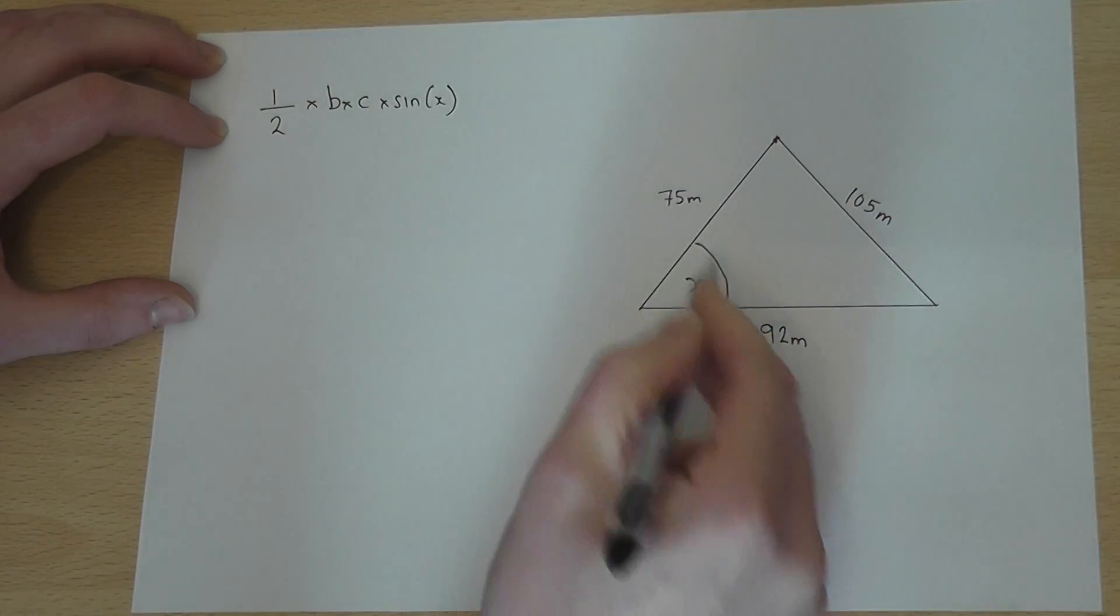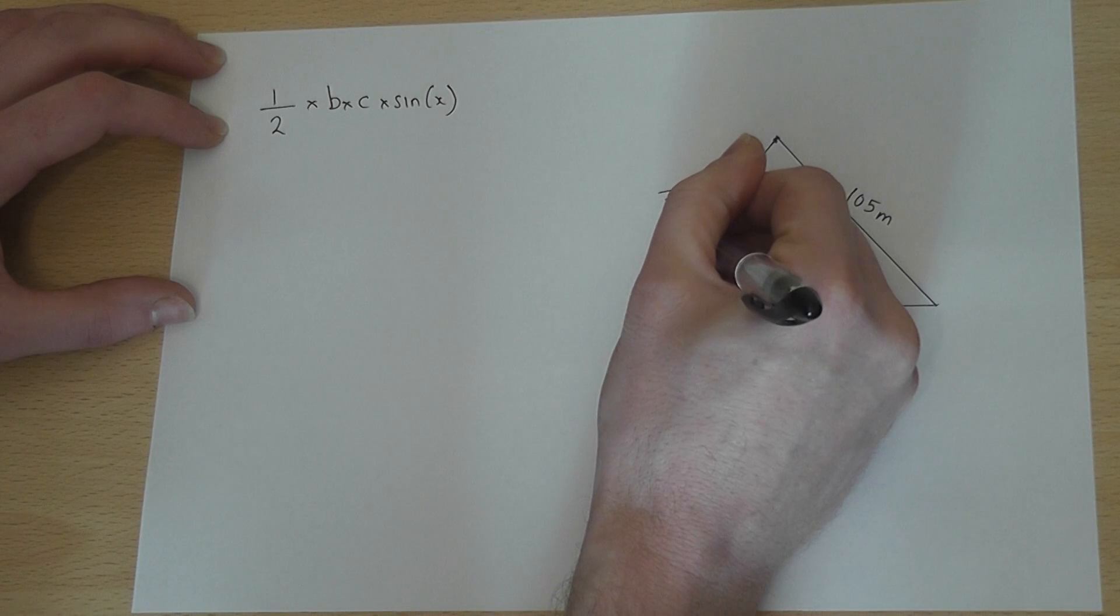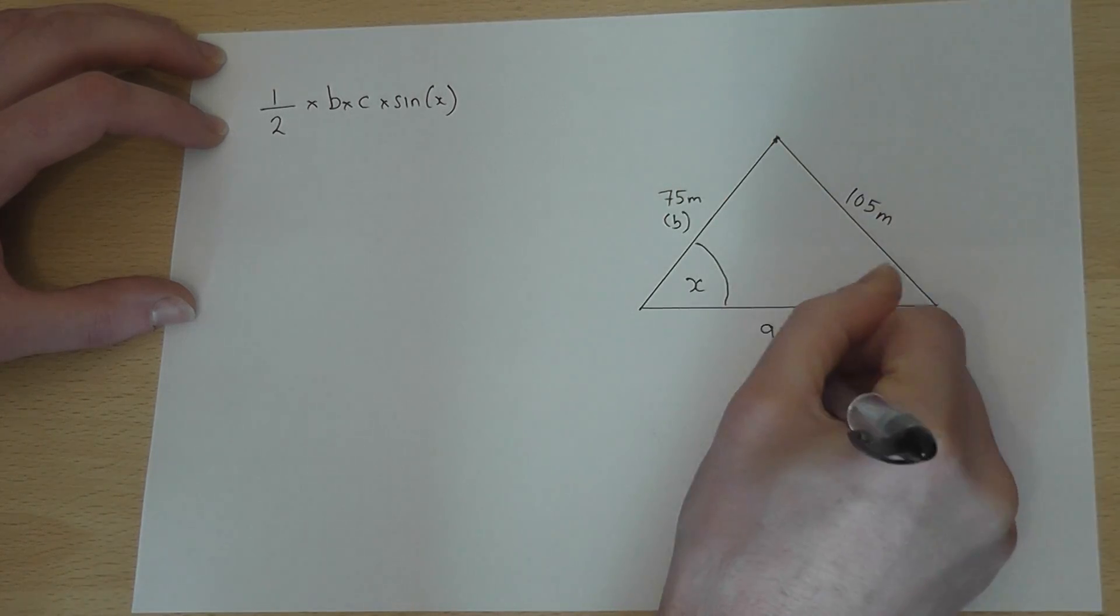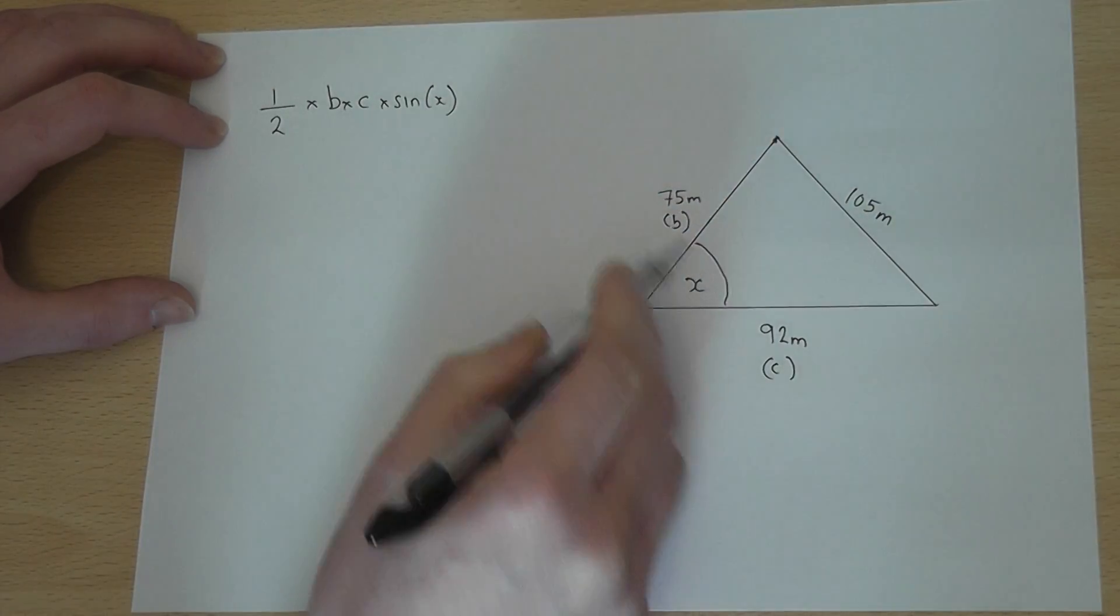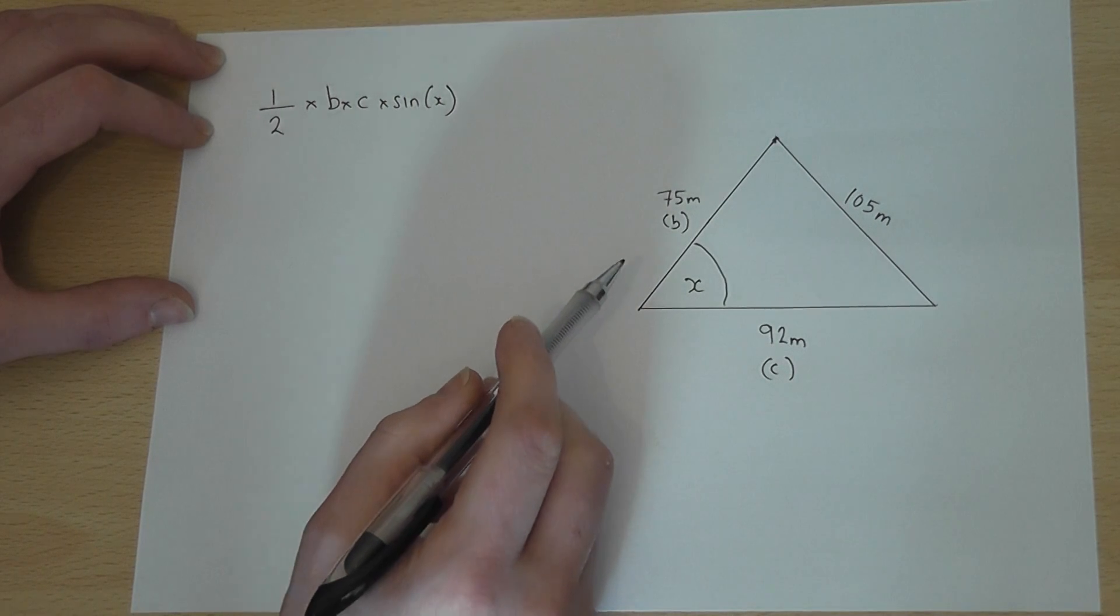where B and C are the two sides which form the angle. B and C or C and B. It doesn't matter which way round you do that.